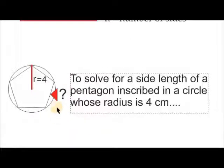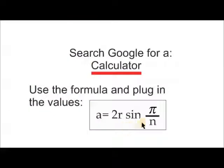To solve for the side length of a pentagon inscribed in a circle whose radius is 4 centimeters, search Google for a calculator, use the formula, and plug in the values.